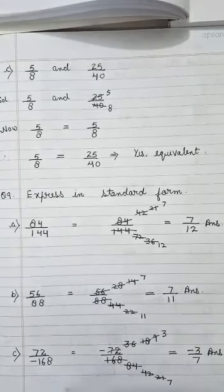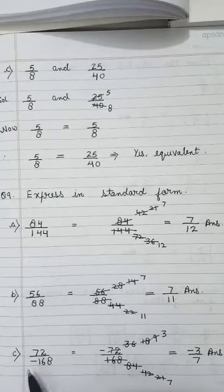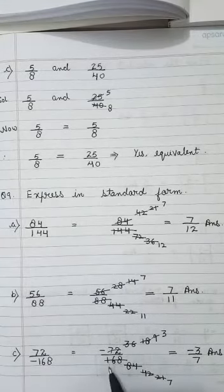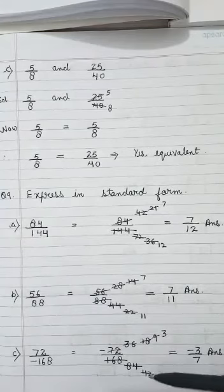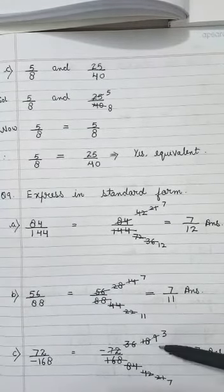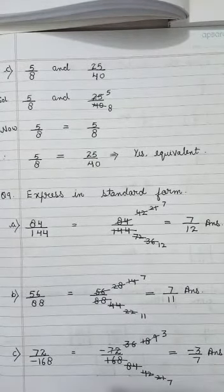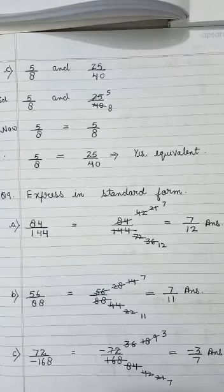The next is 72 by minus 168. This is a negative rational number with a negative sign in the denominator, so shift it to the numerator directly. Now reduce the number: divide by 2 to get 36 by 84, then by 2 to get 18 by 42, then by 2 to get 9 by 21, then by 3 to get 3 by 7. So the standard form is minus 3 by 7 — the negative sign shifts to the numerator and the lowest form is 3 by 7.